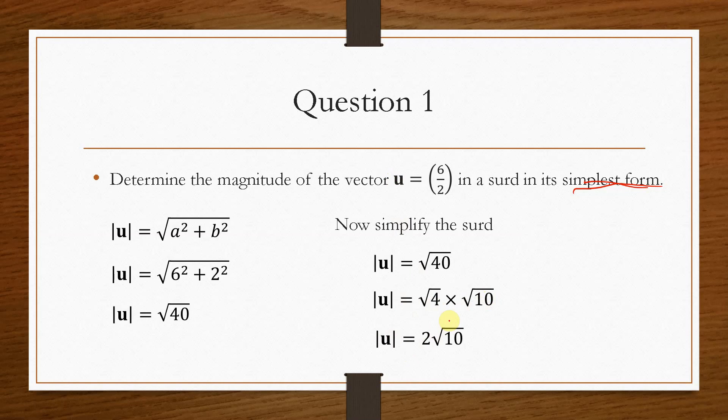And that's how you would go about determining the magnitude of any vector. It is as simple as that. You use this equation, you get your nomenclature around the correct way, and you basically apply Pythagoras. If you're left with a surd, make sure you simplify it all the way through to as far as possible.